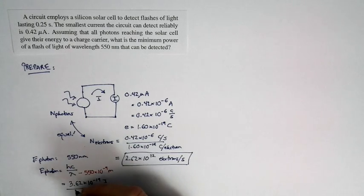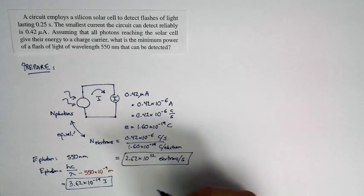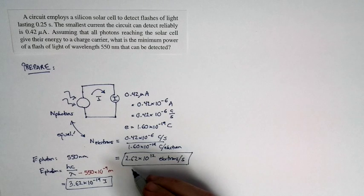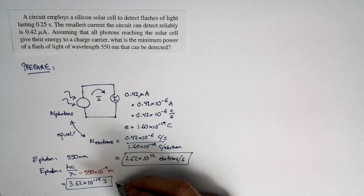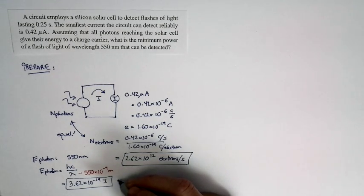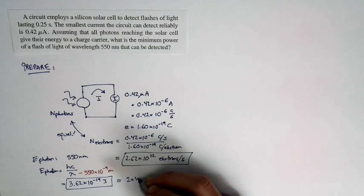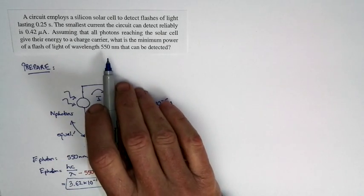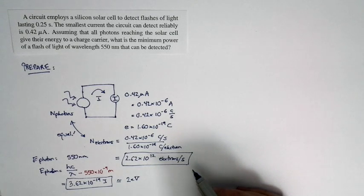A couple of points here: with the number of electrons per second and the energy of an individual photon, I've kept three significant figures to avoid rounding errors, since this is an intermediate stage of the calculation. Also note that 3.6 times 10 to the negative 19th joules is approximately equal to 2 electron volts — recall that 1 electron volt is 1.6 times 10 to the negative 19th joules. About 2 electron volts is appropriate for a wavelength in the middle of the visible light spectrum.